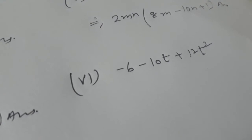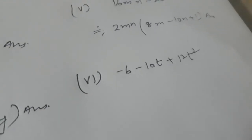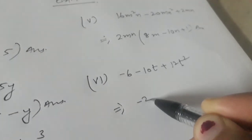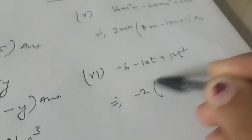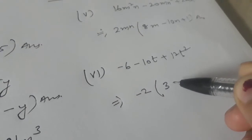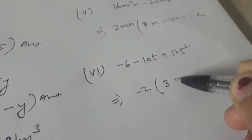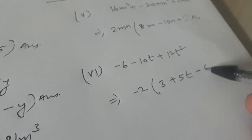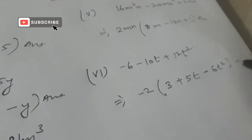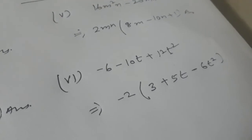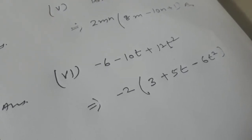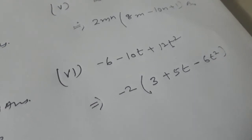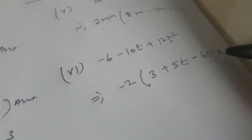The sixth part is minus 6 minus 10t plus 12t². We can take minus 2 as common, so we will be left within the bracket with 3 plus 5t minus 6t². So the answer of the sixth part is minus 2(3 plus 5t minus 6t²).